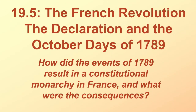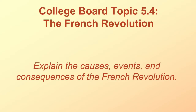This is lesson 1905: the French Revolution, the Declaration, and the October Days of 1789. The guiding question is: how did the events of 1789 result in a constitutional monarchy in France, and what were the consequences? We're still dealing with the French Revolution, topic 5.4 — explain the causes, events, and consequences of the French Revolution.